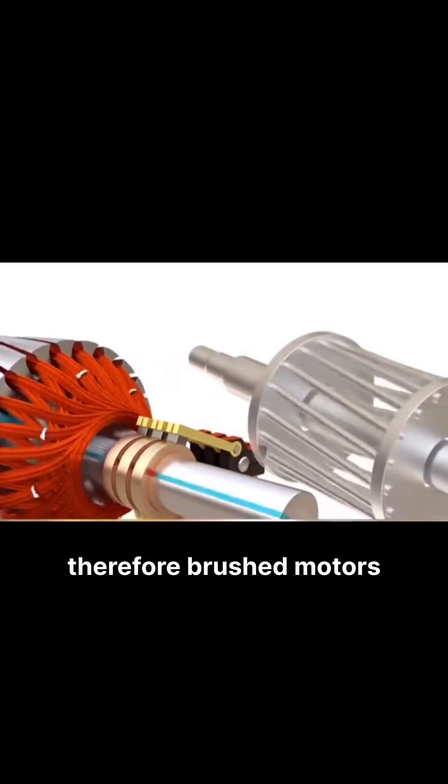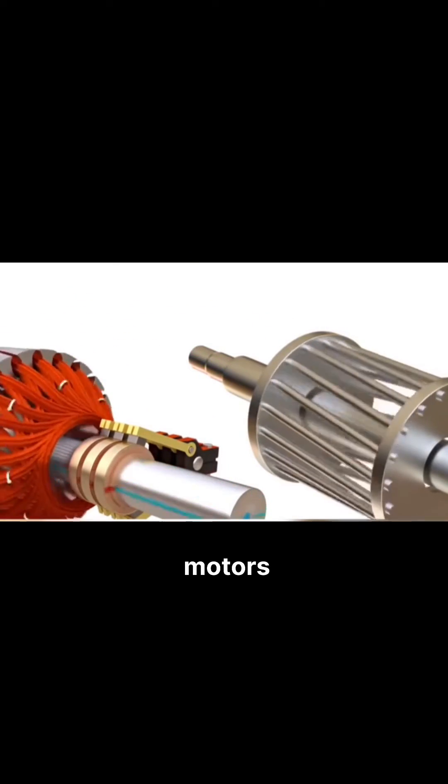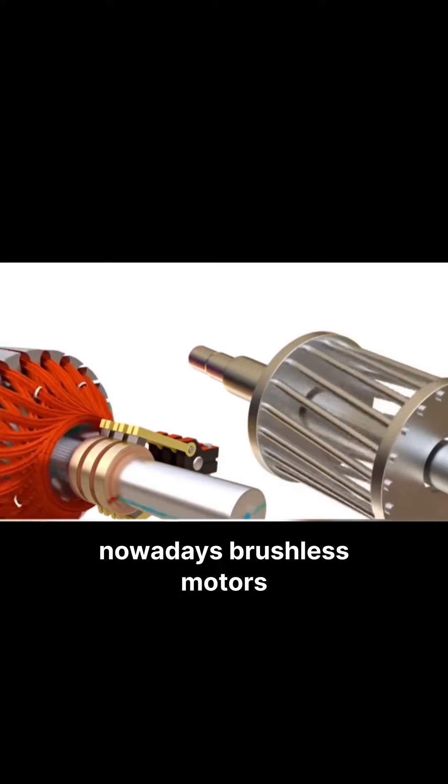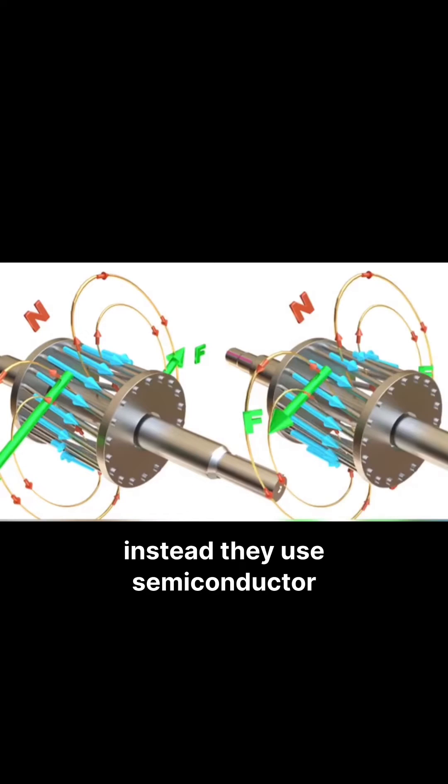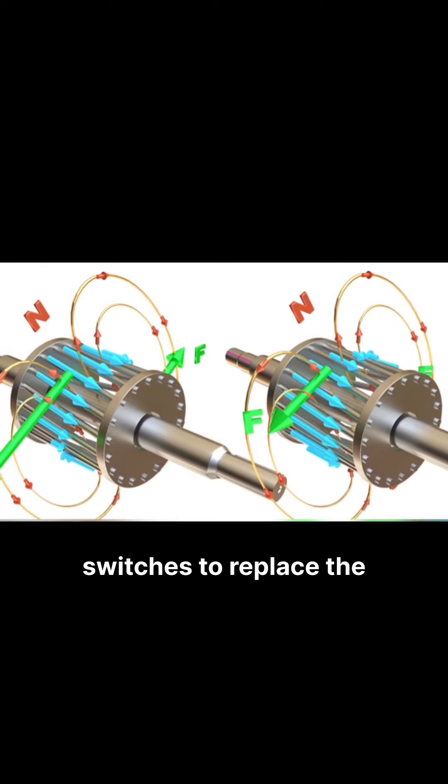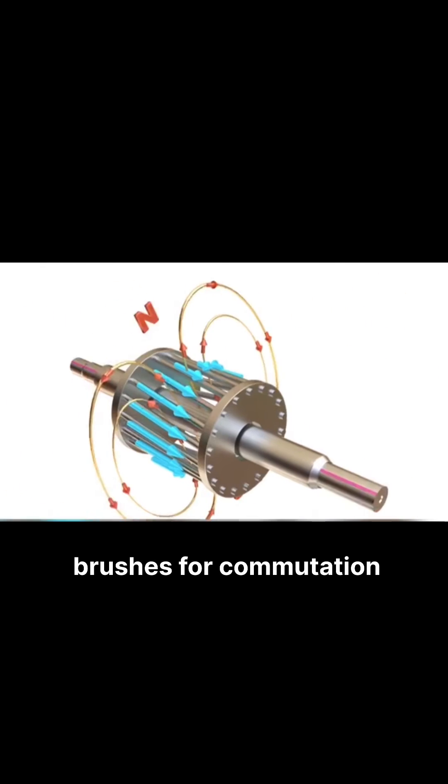Therefore, brushed motors have gradually been replaced by brushless motors nowadays. Brushless motors do not have brushes; instead, they use semiconductor switches or electronic switches to replace the brushes for commutation.